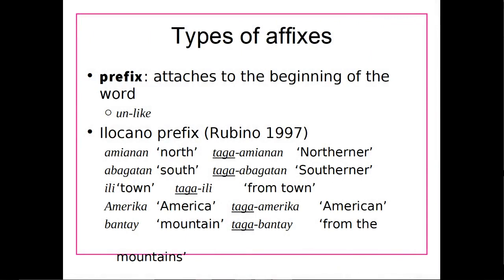There are different types of affixes. You may have heard terms like prefix and suffix before — that's exactly what we're talking about here. A prefix is a bound morpheme that attaches to the beginning of a word. So the un- in unlike, for example, is a prefix. Other languages have these too, not just English. In Ilocano, we have the word for north, and taga- attached to the beginning gives northerner or someone from the north. The same taga- on south gives southerner, and on town gives from town. So in Ilocano, taga- attaches to the beginning of a word and means somebody from that place.